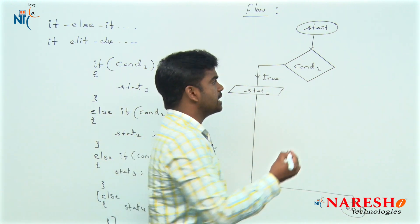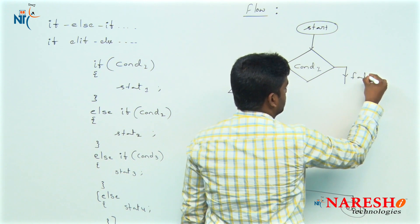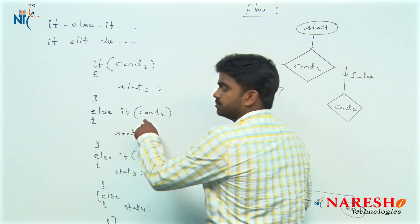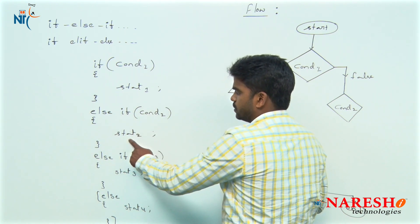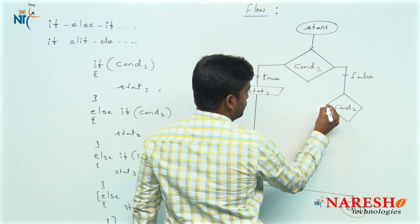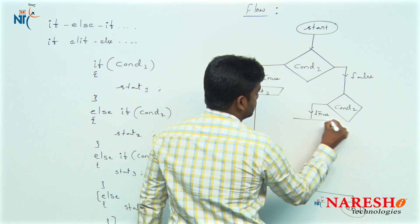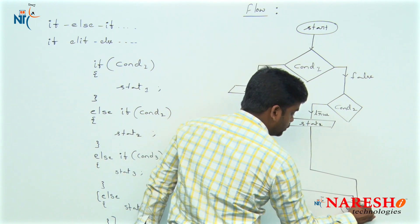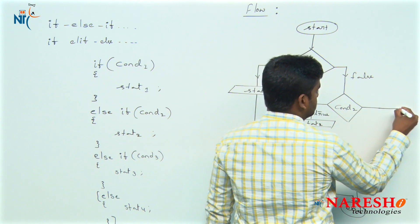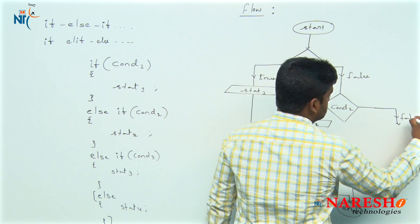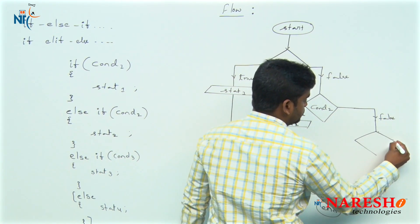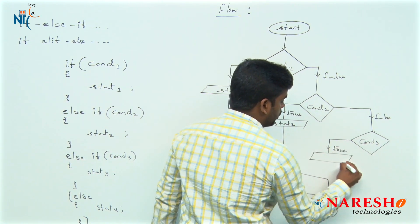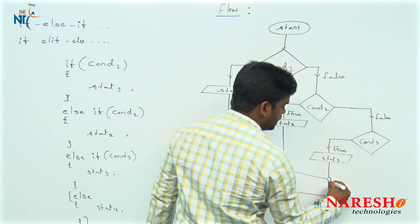If condition one is false, it will go and check the second condition. If the second condition has also failed, it will go and check the third condition — the next block. Like that it will go continuously. If at least the third condition is true, it will execute that block — statements three execute — then it will move to End.